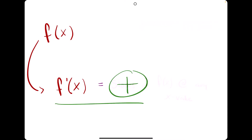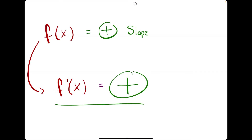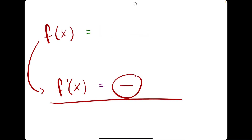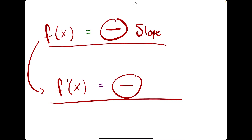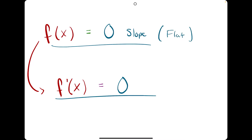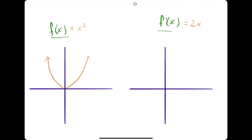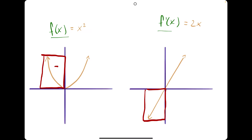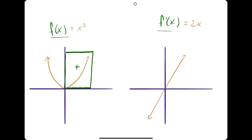The takeaway is this: the y values output by the derivative function are equal to the slopes of the original function at any x value. Whenever the outputs of the derivative function are positive, that means the original function has a positive slope. Whenever the outputs are negative, the original function has a negative slope. And whenever the derivative equals zero, the original function has a zero slope, or flat slope. On a graph with original function x squared and derivative function 2x: wherever x squared has decreasing behavior or a negative slope, the derivative function 2x has negative y values, existing below the x-axis. Wherever x squared has a positive slope, the derivative function has positive y values above the x-axis.